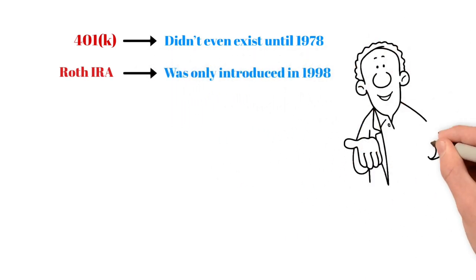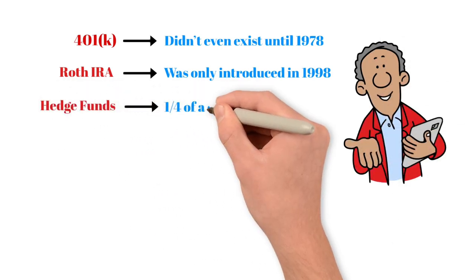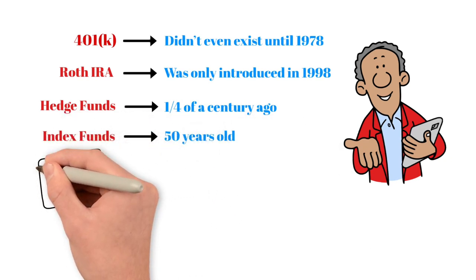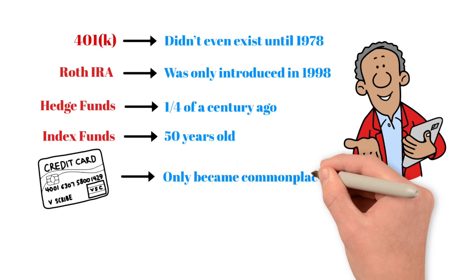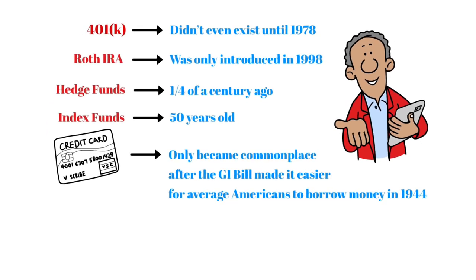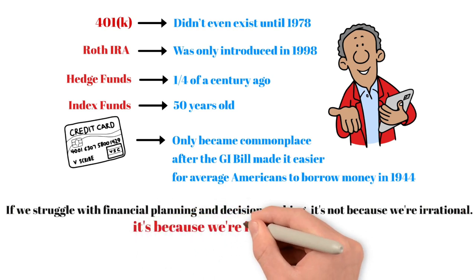That means that one of the most basic economic concepts we use in today's world is less than two generations old. The 401(k), the principal method of funding retirement, didn't even exist until 1978, while the Roth IRA retirement scheme was only introduced in 1998. Other key ideas and practices aren't much older. Hedge funds only really took off a quarter of a century ago, and index funds are just 50 years old. Even consumer debt like mortgages, car loans, and credit cards, one of the primary drivers of economic growth in the United States, only became commonplace after the GI Bill made it easier for average Americans to borrow money in 1944. If we struggle with financial planning and decision making, it's not because we're irrational, it's because we're inexperienced.